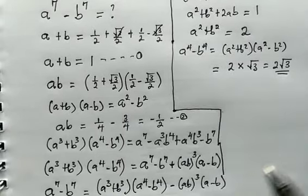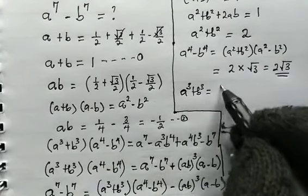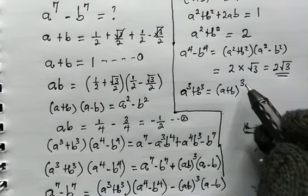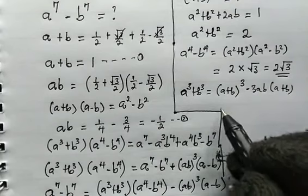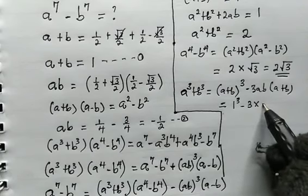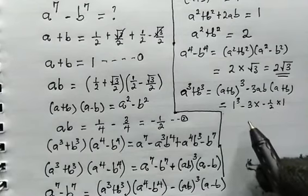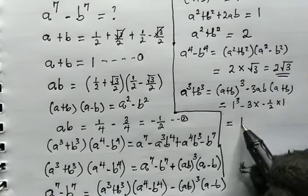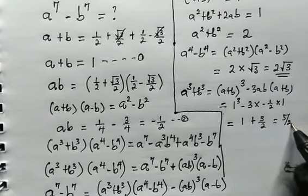Next, we find the value of A³ + B³ using the identity: A³ + B³ = (A + B)³ − 3AB(A + B). Substituting, we get 1³ − 3 × (−1/2) × 1 = 1 + 3/2 = 5/2. So A³ + B³ = 5/2.